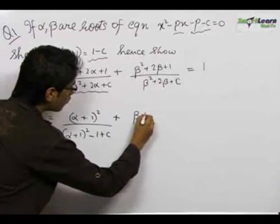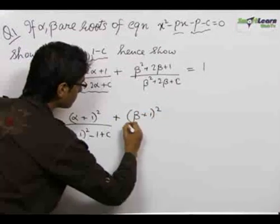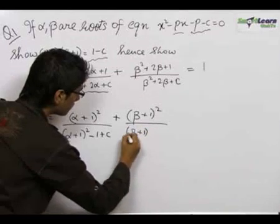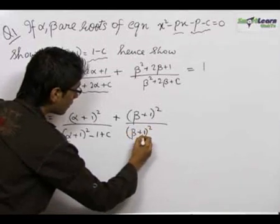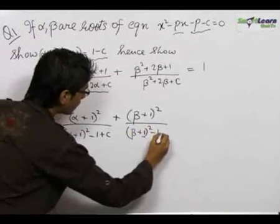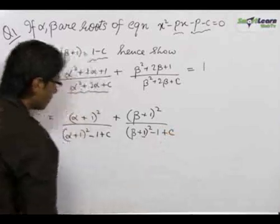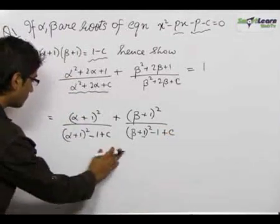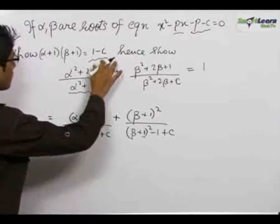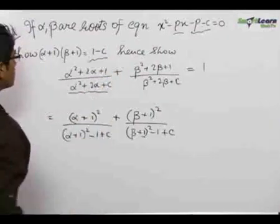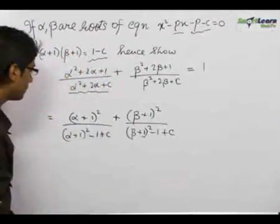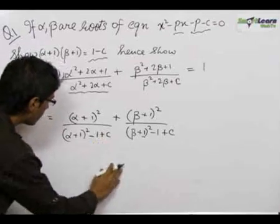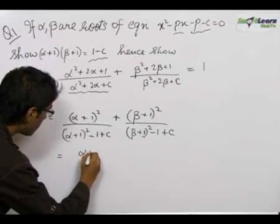Similarly, the denominator can also be converted to (beta + 1)² — since we added an extra 1, we subtract a 1 to leave the expression as is. Now from the first part, we know that 1 - c = (alpha + 1)(beta + 1), so we substitute the value of 1 - c over here.